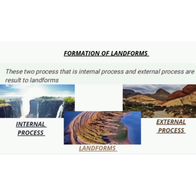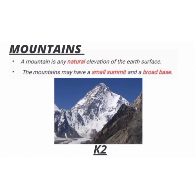So the internal process and the external process both result in landforms, and this is how landforms are made. Now we will study about mountains. A mountain is any natural elevation of the earth's surface. The mountains may have a small summit and a broad base, and it is considerably higher than the surrounding areas.